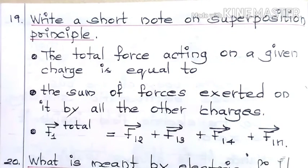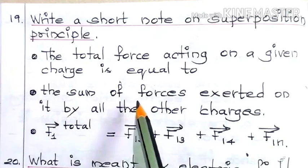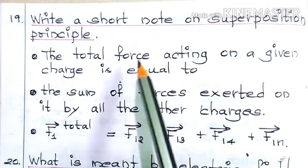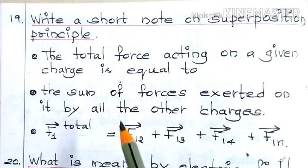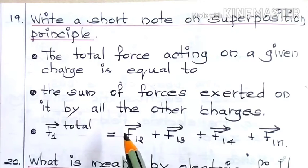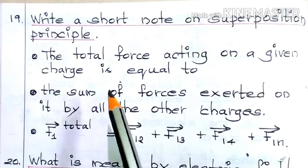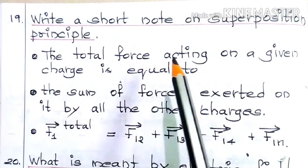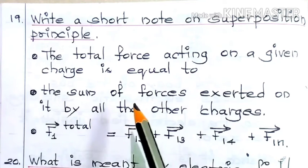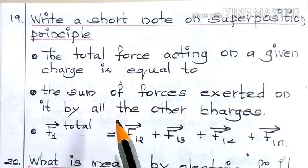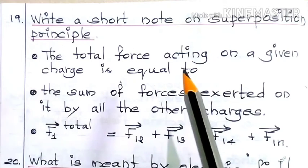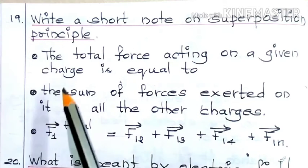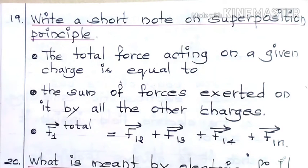What does it mean? Let us suppose there is a charge, and around that charge there are other charges also present. So each and every charge is exerting a force on that particular charge. The total force acting on a given charge is equal to the sum total of all the forces exerted on it by the other charges present around it.